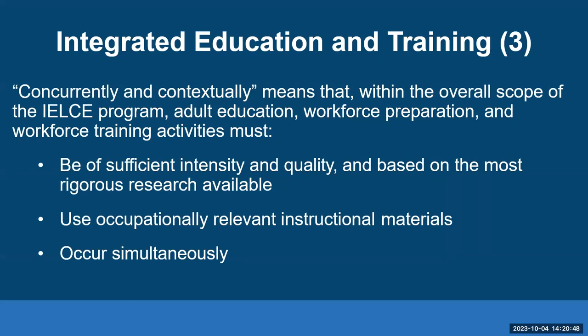What does 'concurrently and contextually' mean? It means that within the overall scope of the program, those three components — adult education, workforce prep, and workforce training — must be of sufficient intensity and quality, based on the most rigorous research available, and must use occupationally relevant instructional materials. All three components have to occur simultaneously. One of the easiest ways to think about it is what it's not — it's not sequential.